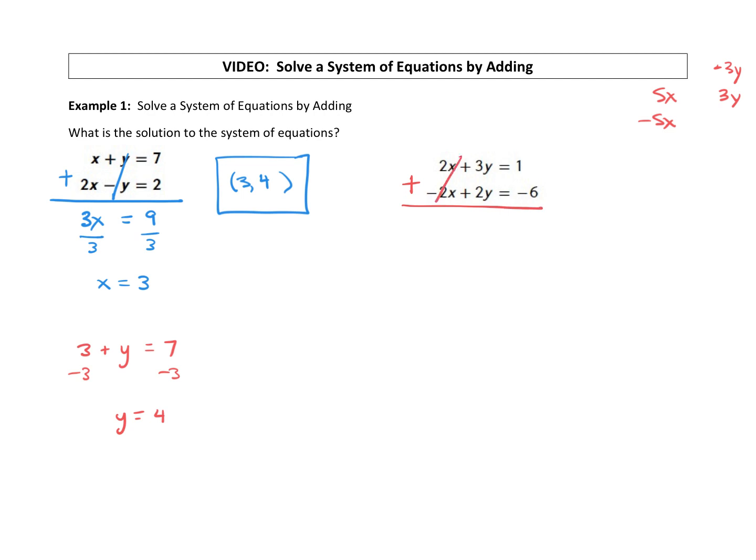2x plus negative 2x cancels. 3y plus 2y is 5y. Carry down your equal sign. 1 plus negative 6 is negative 5. All right, so now we have an equation with just a y because we eliminated the x's. Let's go ahead and divide both sides by 5 and we get y equals a negative 1.